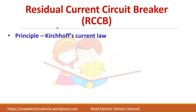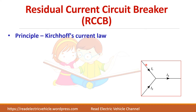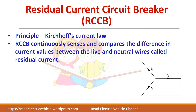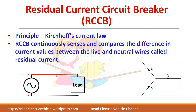The basic principle behind RCCB is Kirchhoff's current law. According to this law, the sum of the current entering a node should be equal to the current leaving the node. In this case, I1 and I2 are entering the node, so they should equal I3. This RCCB will continuously check the current between the phase line and neutral line. The AC supply is supplying a load, and the load draws some current which passes through the load and returns back.